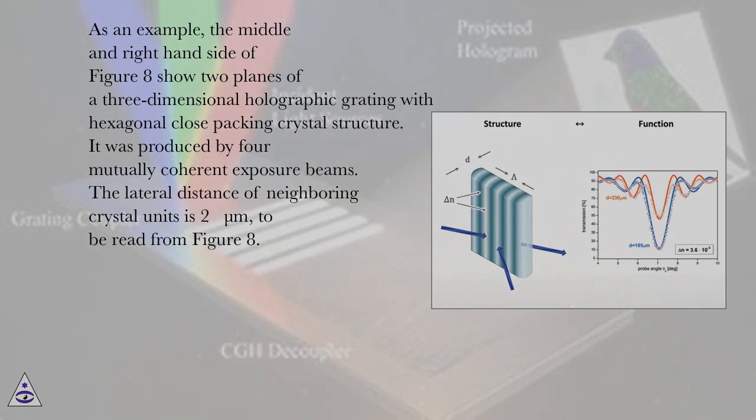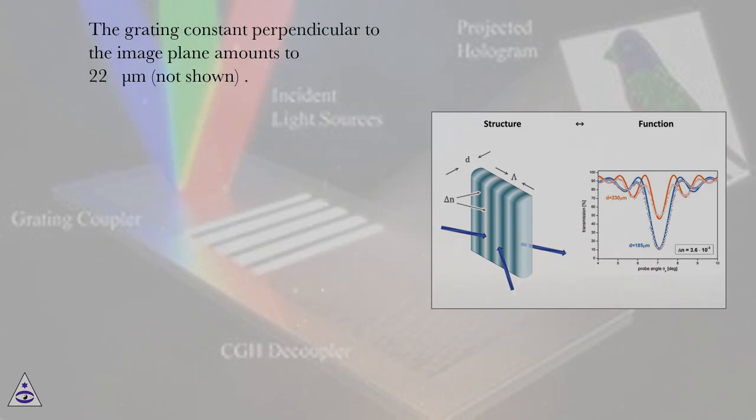The lateral distance of neighboring crystal units is 2 micrometers, to be read from Figure 8. The grating constant perpendicular to the image plane amounts to 22 micrometers.